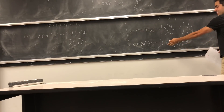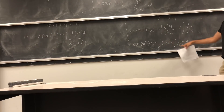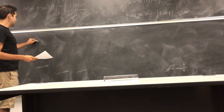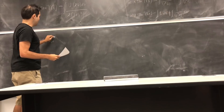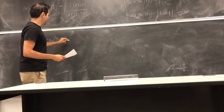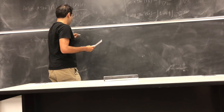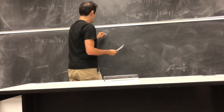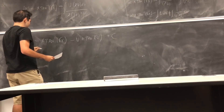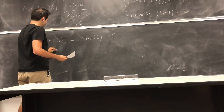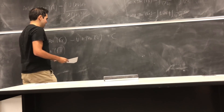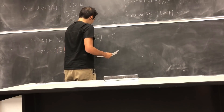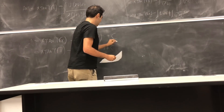Those things are easy to evaluate. We get x arctangent of square root of x, minus the integral of 1 du, plus the integral of 1 over (u squared plus 1) du. This equals x arctangent of square root of x, minus u, plus arctangent of u, plus a constant. But remember u is just square root of x, so the final answer is x arctangent of square root of x, minus square root of x, plus arctangent of square root of x, plus a constant.